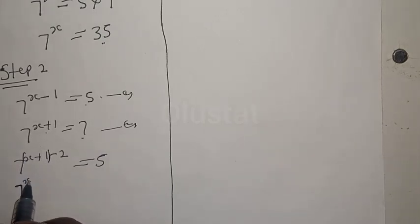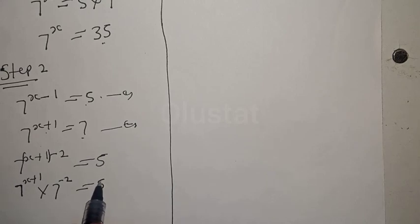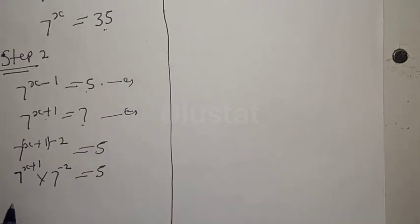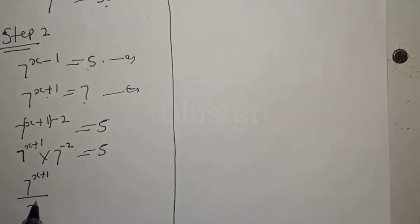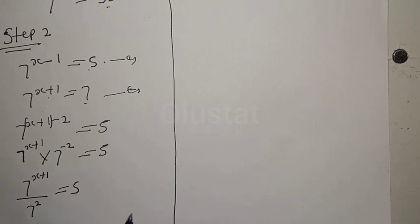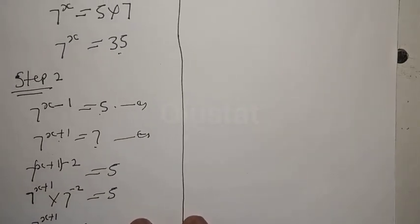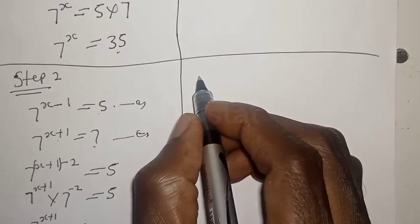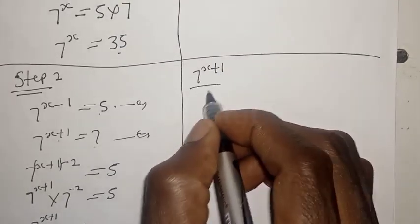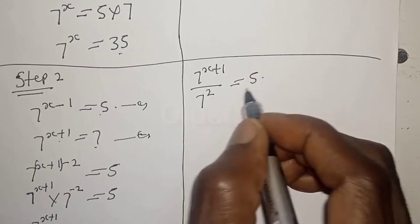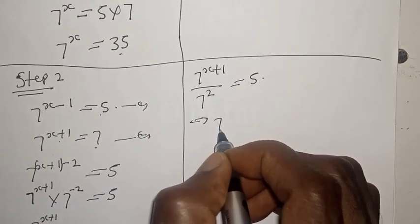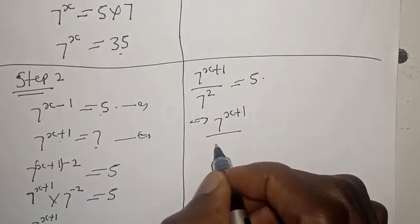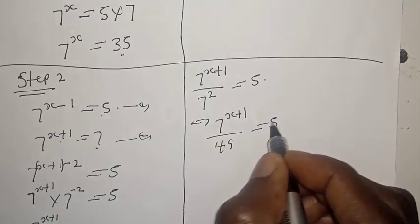This can be rewritten as 7 raised to power x plus 1 multiplied by 7 raised to power minus 2 is equal to 5. Then we have 7 raised to power x plus 1 over 7 raised to power 2 is equal to 5.